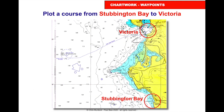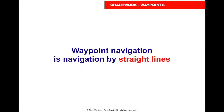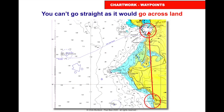Looking at RYA chart three, top left-hand corner, we start in Stubbington Bay where the anchor symbol is, and we're going into the south channel with the leading lines into Victoria. Waypoint navigation is navigating with straight lines — a bit like dot-to-dot — so you can't go straight as it would cross the land.